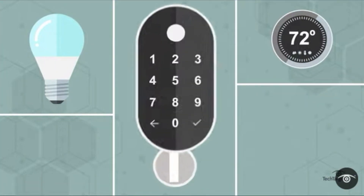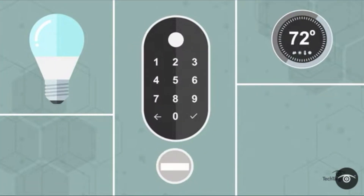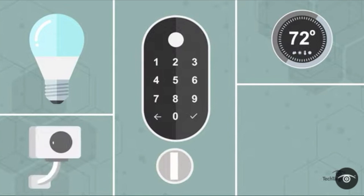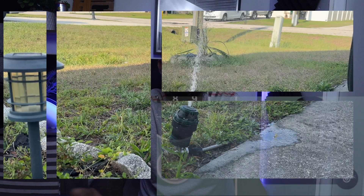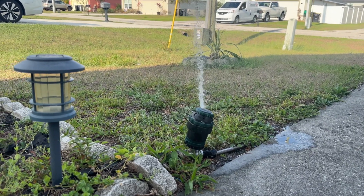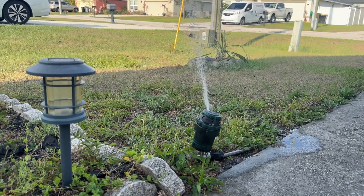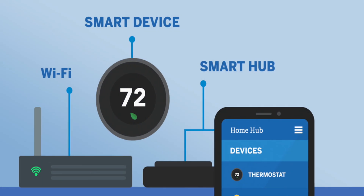Smart homes allow you to have greater control of your energy use, all while automating things like adjusting temperature, turning lights on and off, opening and closing window treatments, and adjusting irrigation based on the weather. To start a smart home, there are a couple things you need — a good Wi-Fi connection is key.